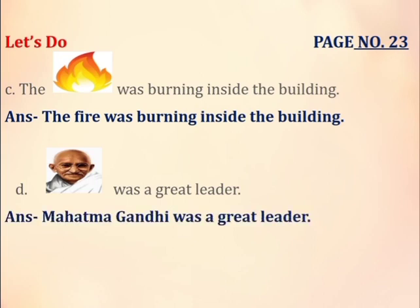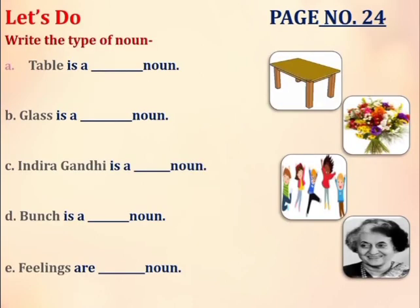I hope this must be clear to you all. Now let's move ahead on page number 24, where the question says: Write the type of noun. Children, we have learned that there are five types of nouns: proper noun, common noun, collective noun, material noun, and abstract noun. So now out of these five, we have to choose one according to the noun given in the question.